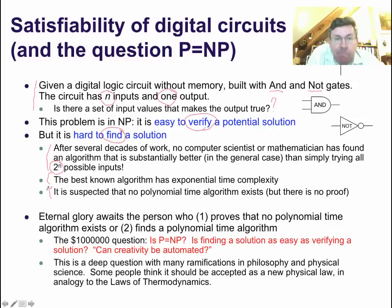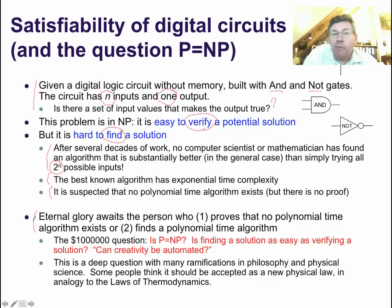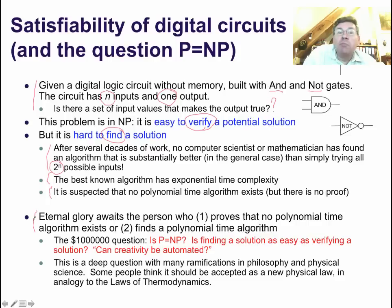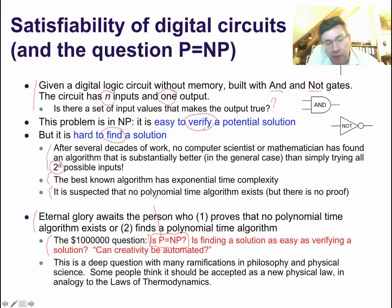This has led to the following state: there are two possibilities. Either no polynomial time algorithm exists — and then you have to prove that — or a polynomial time algorithm exists, and then you have to show the algorithm. Neither has been done. If you succeed, you will surely win the Turing Award, which is the equivalent of the Nobel Prize for computer scientists, and you will be eternally famous. This is the $1 million question — there is in fact a $1 million prize for it. Is P equal to NP? Is the class of problems that take polynomial time the same as the class of problems that can be checked in polynomial time?